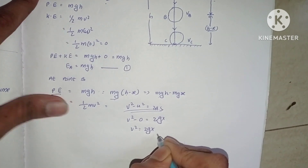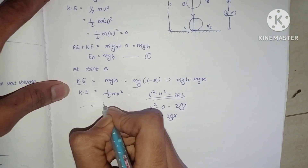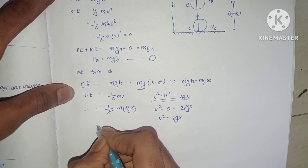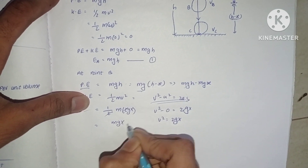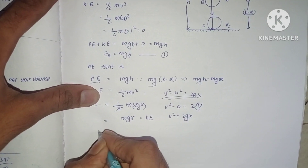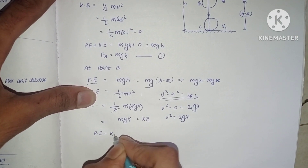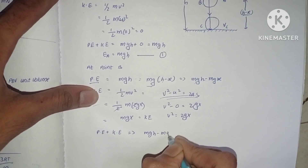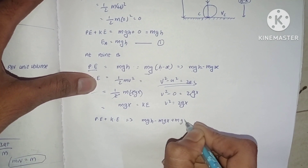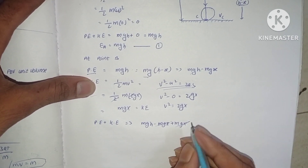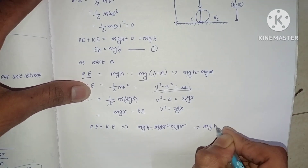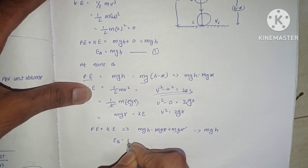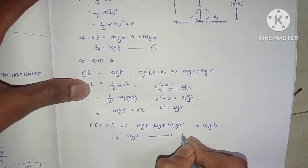Using v squared = 2gx, kinetic energy KE = half m into 2gx = mgx. Therefore, total energy at B: PE + KE = (mgh minus mgx) + mgx. The mgx terms cancel, giving E_B = mgh.